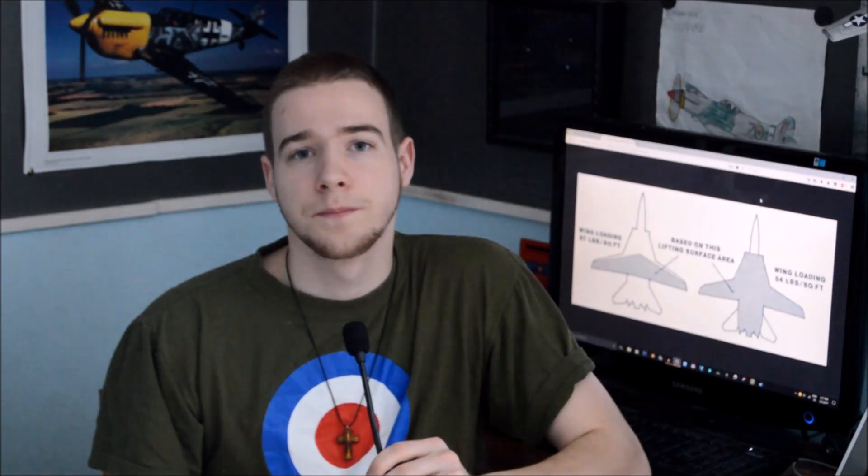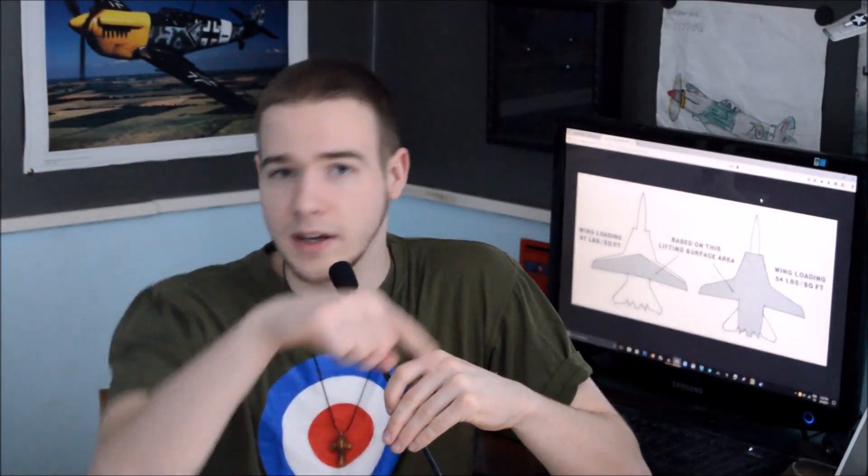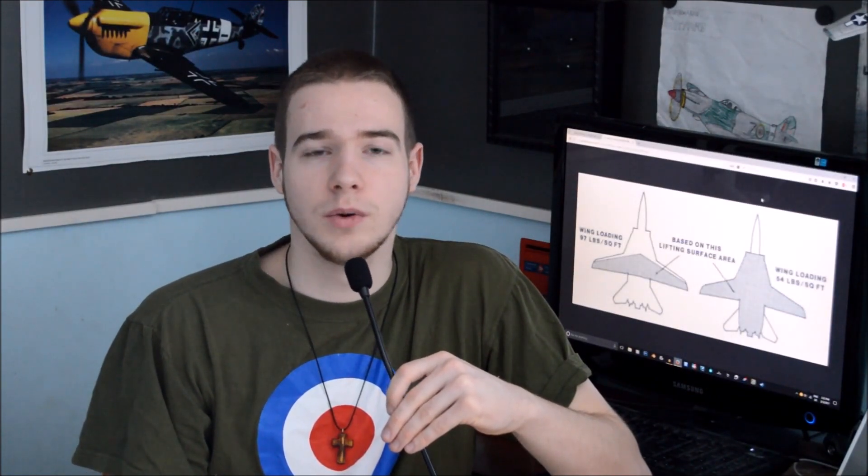Aircraft like the Eurofighter Typhoon, Rafale, and Saab Gripen all have canard foreplanes to create more lift and compensate so that they have a much lower wing loading. Because with a fighter aircraft, you wouldn't want to take the approach like I did with that big square paper airplane because you wouldn't be very fast at all. You might be maneuverable, but you wouldn't be fast.